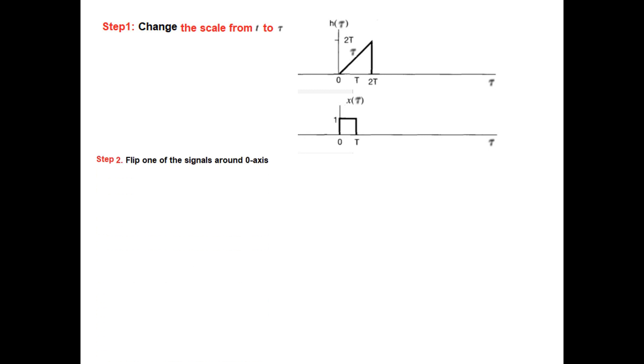Flip one of the signals. We will now flip Xt signal around X axis. So from here we flip it like this. So this becomes the flipped signal, and since it is in the negative direction, it will be X minus tau. And now we will play with these two signals.